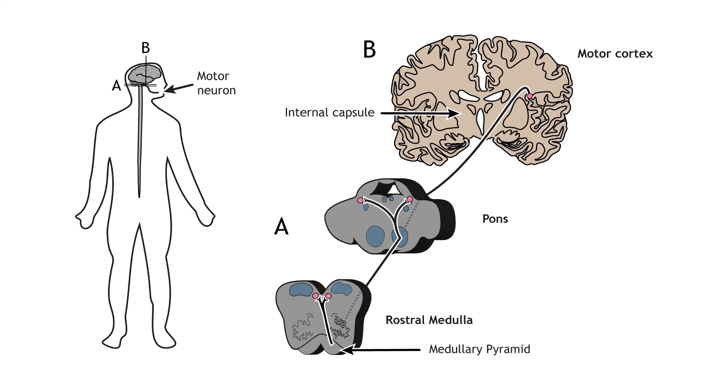The corticobulbar tract is another lateral tract and sends motor information to cranial nerves for motor control of the face. This path travels ipsilateral from the cortex into the brain stem, where it branches off at the appropriate cranial nerve level in either the pons or the medulla and then innervates cranial nerve neurons bilaterally.